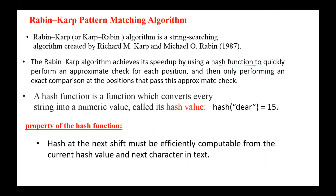A hash function is a function which converts every string into a numeric value called its hash value. For example, hash of 'DR15'. There is a main property of the hash function here: the hash at the next shift must be efficiently computable from the current hash value and the next character in the text.